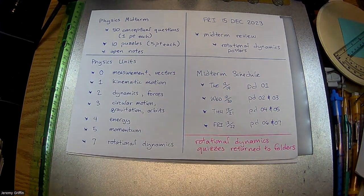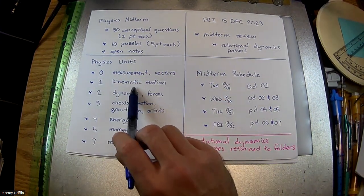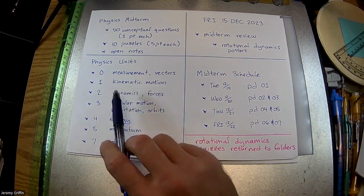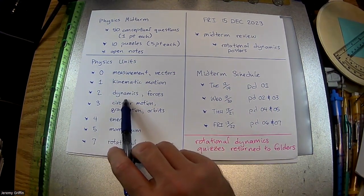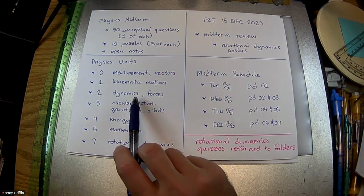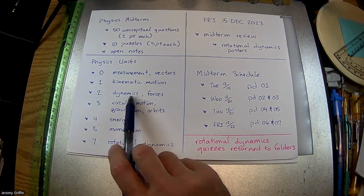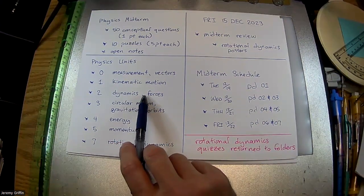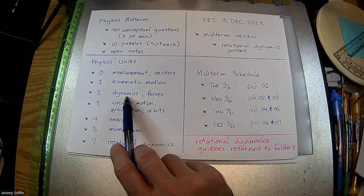Unit one was kinematic motion. There's your linear motion, projectiles. Unit two, we had dynamics. There was forces, Newton's laws of motion. I remember some Atwoods going on. I remember blocks sliding down inclines, right? Coefficient friction. Free body diagrams, right?